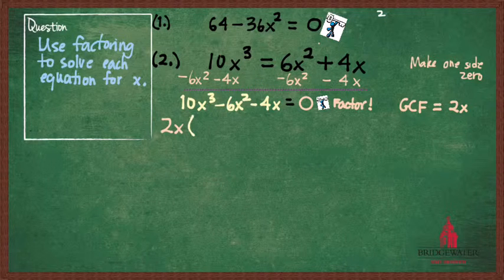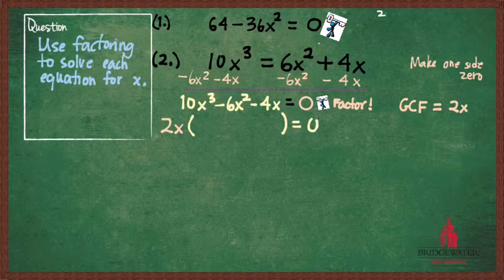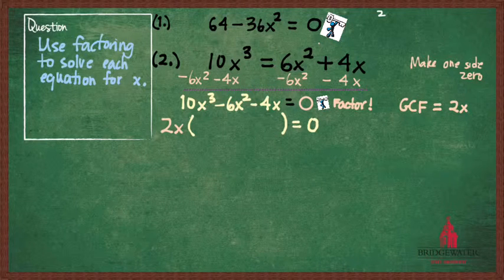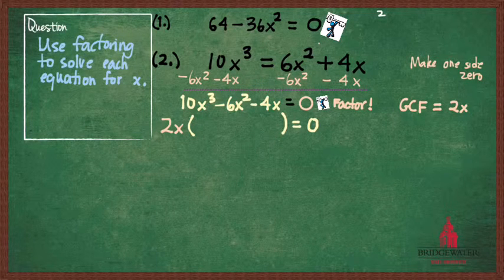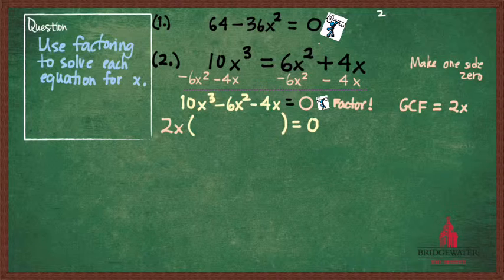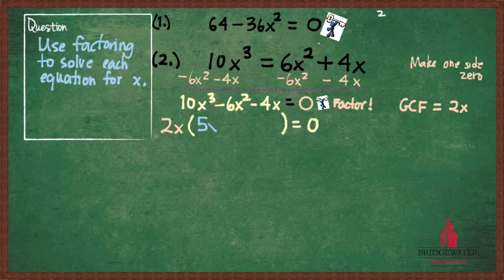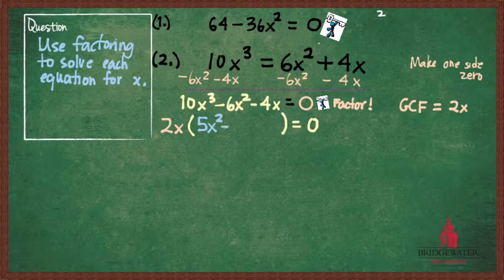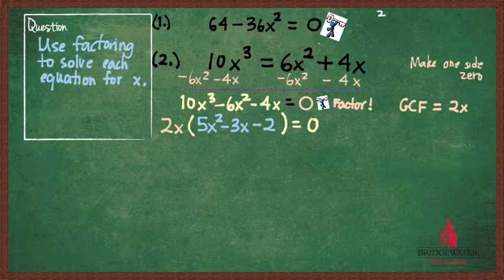And again, in every factoring strategy, looking for a GCF is a good first step. Because that puts the difficult factoring on an expression which is as simple as it can possibly be. If I factor 2x out of this trinomial, what do I have left over? 2x times 5x² - 3x - 2. Awesome. Great.